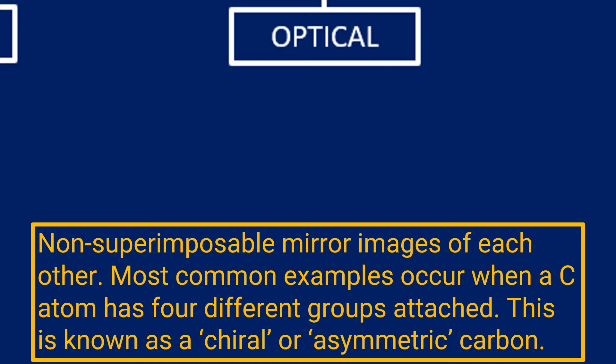Now I don't believe this is covered in much detail at all in this spec, but I will cover it. This is more of an A-level thing. So I'm going to have four different groups attached to a carbon, and I'm just going to make them up. I'll say I'll have a CH3, we'll have a H, we'll have an OH, and maybe we'll put a chlorine there. So that's four different groups attached to this carbon. This carbon is identified as a chiral carbon.